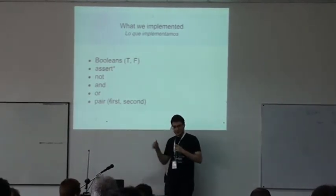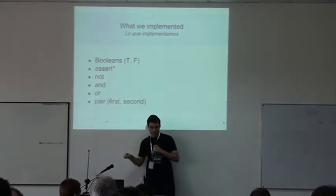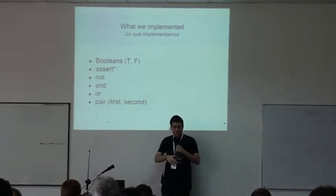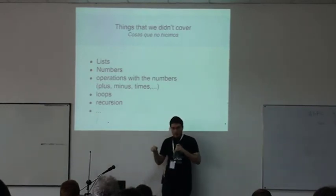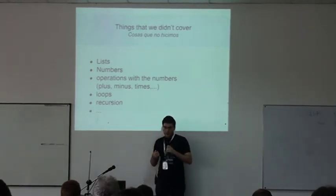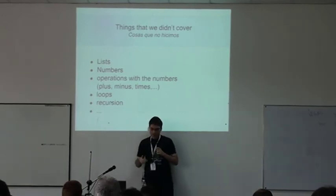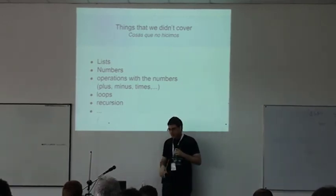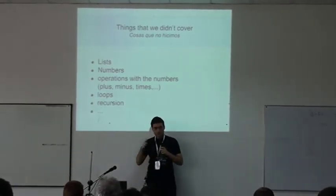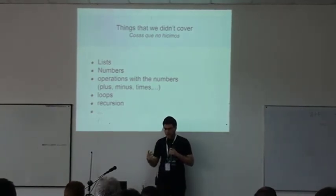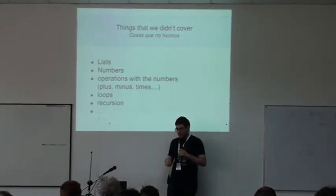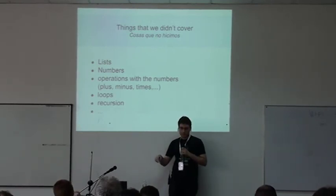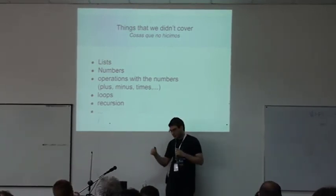It's really cool that we can do that only using one-argument blocks. The things we didn't cover in this talk are the implementations of lists, numbers, operations with numbers, loops, and recursion. Having pairs, you can already imagine how to start implementing lists. If you have any doubts or are curious, you can talk to me later — I have all those things implemented in Smalltalk using only one-argument blocks.